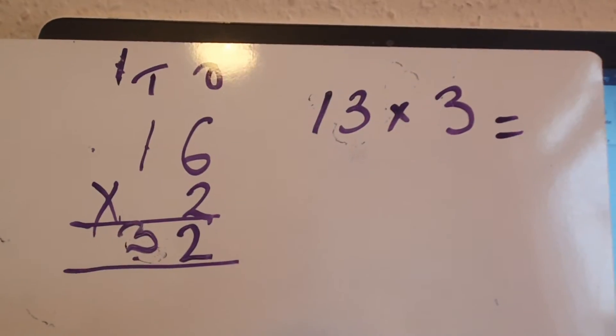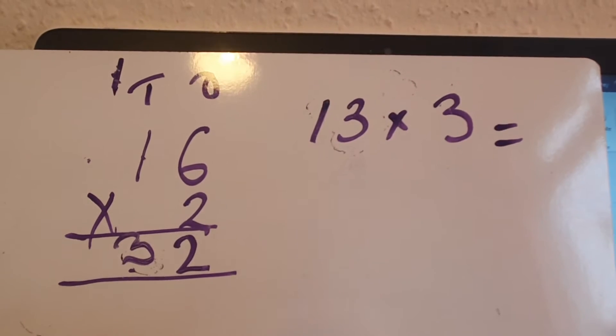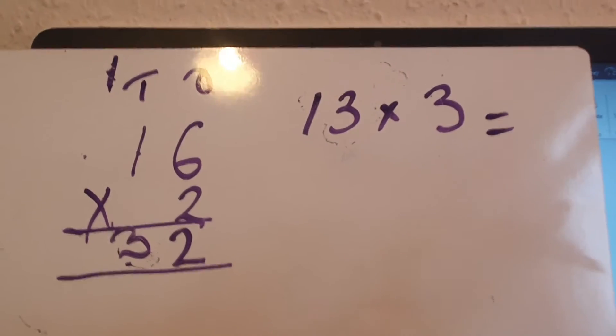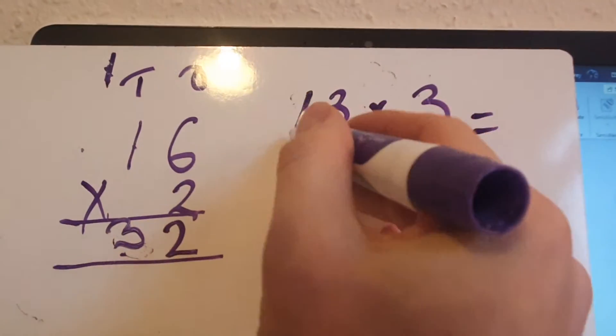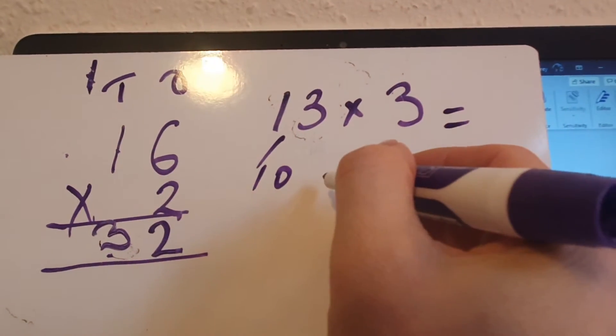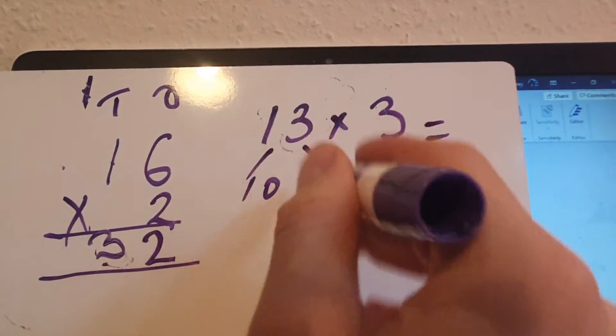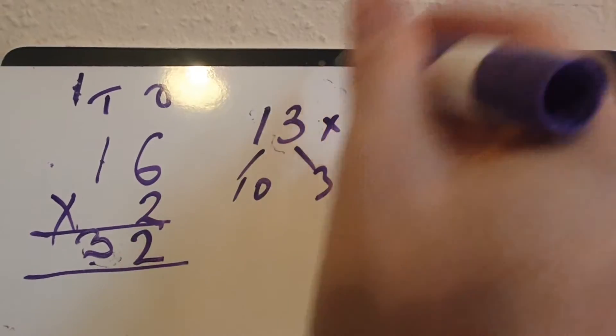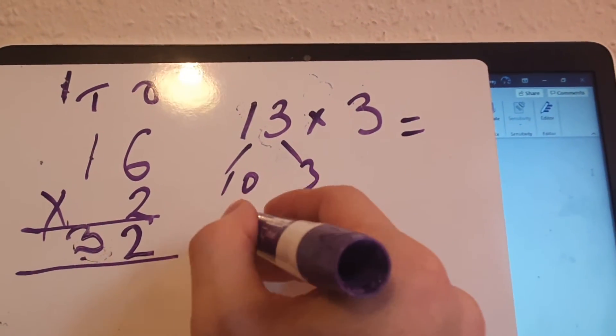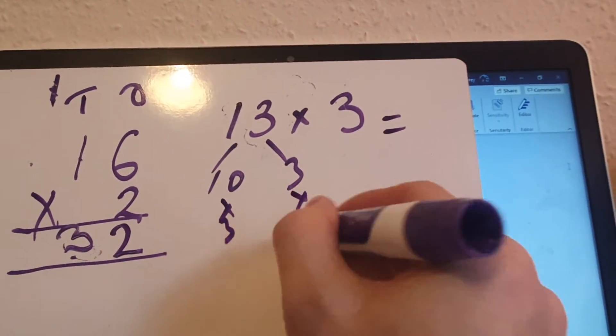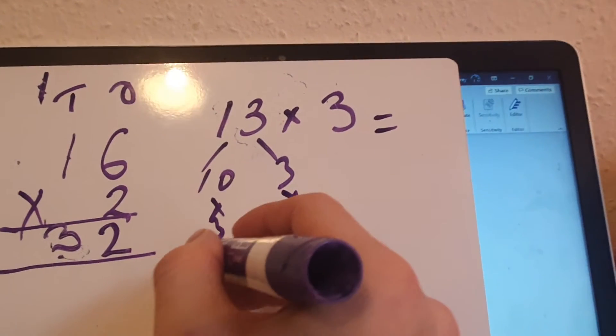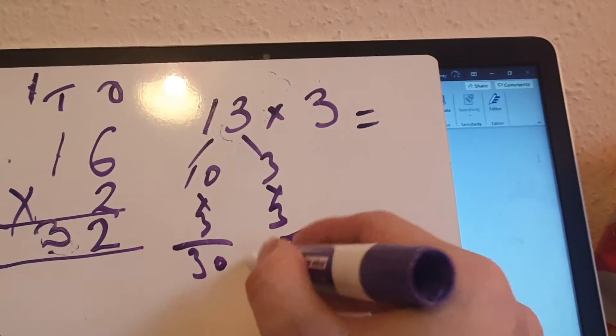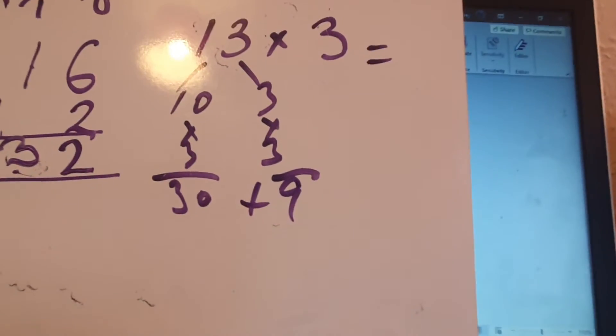Let's do 13 times 3. Now some of you might be able to do that in your heads very quickly by partitioning it and saying, well, 10 times 3, 3 times 3, and add those together. So 10 times 3 is 30 and 3 times 3 is 9. So your answer would be 39.